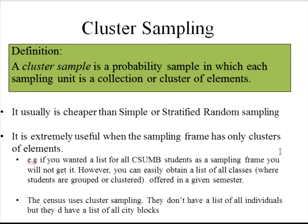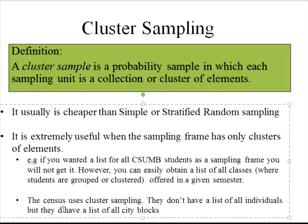Now let's discuss the third type: cluster sampling. A cluster sample is a probability sample in which each sampling unit is a collection or cluster of elements. You don't have the exact elements, but you have groupings of them. This way of sampling is usually cheaper than stratified or simple random sampling. It is also extremely useful when your sampling frame doesn't have the individual elements but has groupings of them. The census uses cluster sampling — they don't have a list of all residents, but they have a list of census blocks or census tracks, so they randomly select these groupings and survey all elements within them.